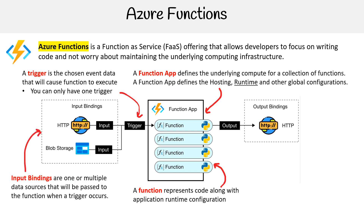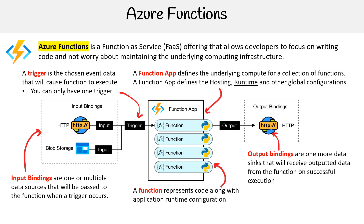You have input bindings — these are one or more data sources that are passed to the function when a trigger occurs. You can pull in data from a variety of different Azure services at the time of trigger, which is quite nice. Then you have output bindings — these are one or more data sinks that will receive output data from the function on successful execution. They say sinks, but you could say consumers if you like.